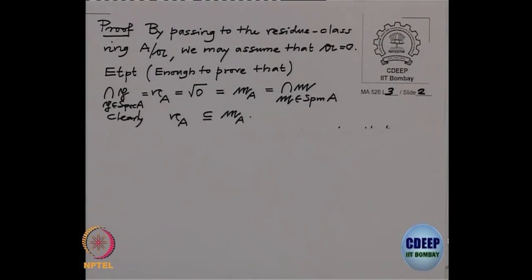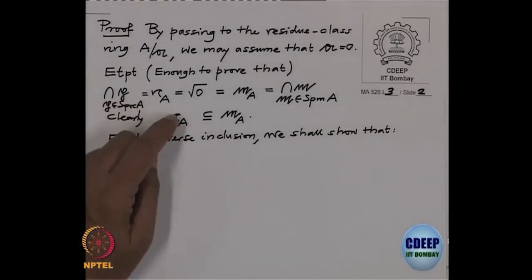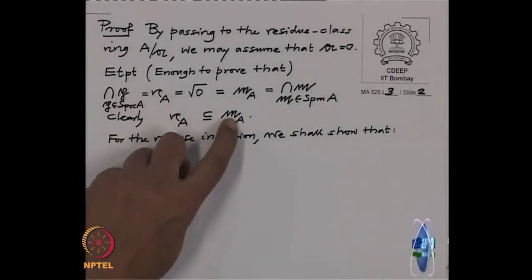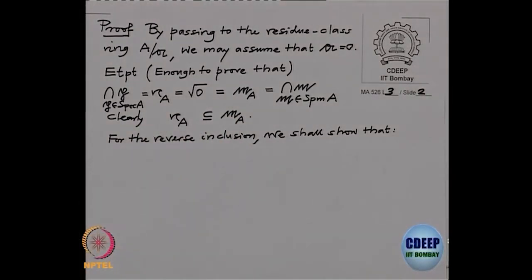One inclusion is obvious: the nil radical is contained in the Jacobson radical, because the nil radical is an intersection over a bigger set and the Jacobson radical is an intersection over a smaller set. For the reverse inclusion, we will show that if some element is not nilpotent, then it is not in the Jacobson radical, which will mean there are no new elements in the Jacobson radical.